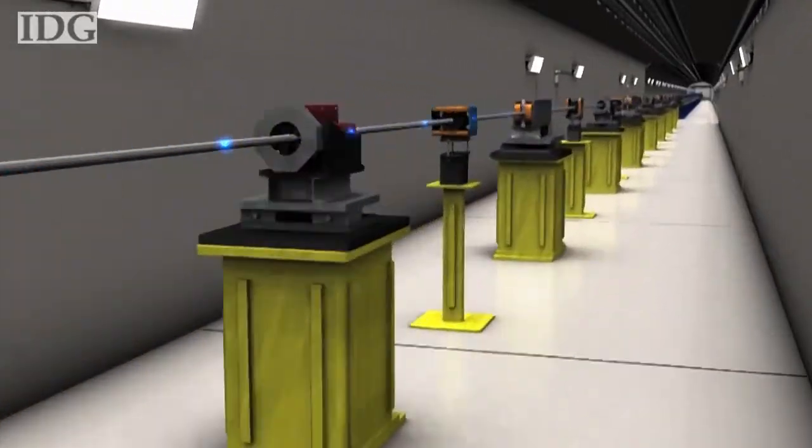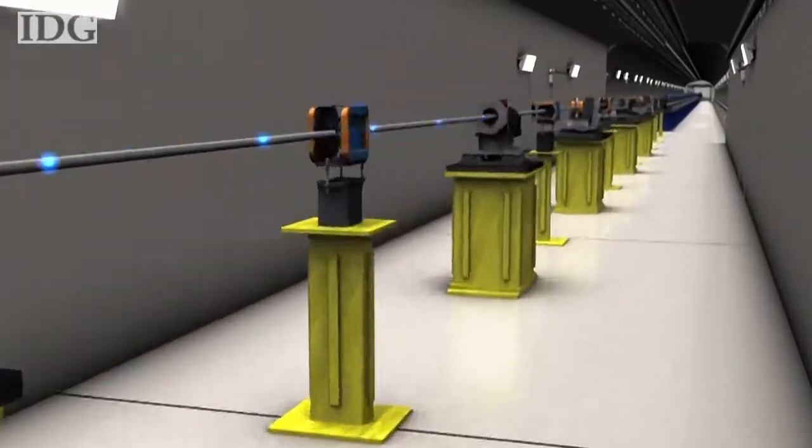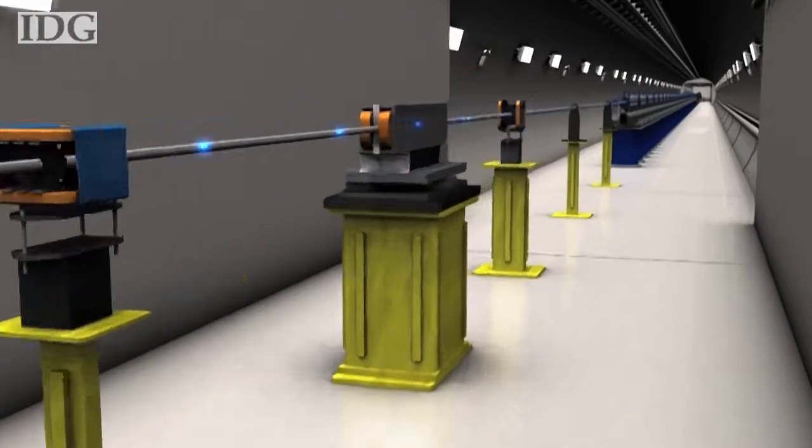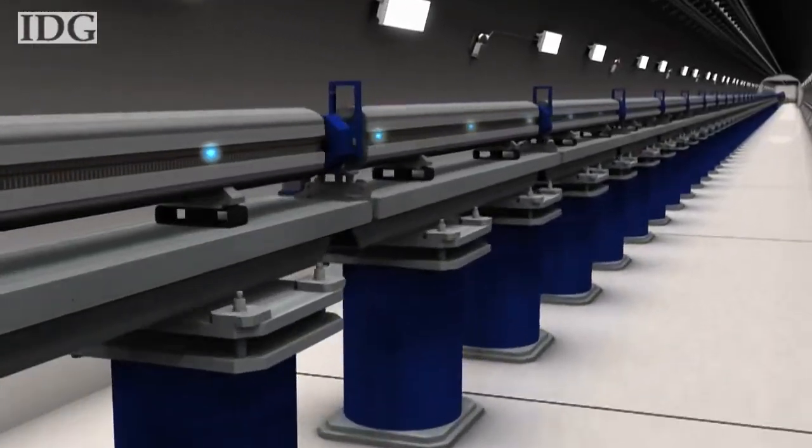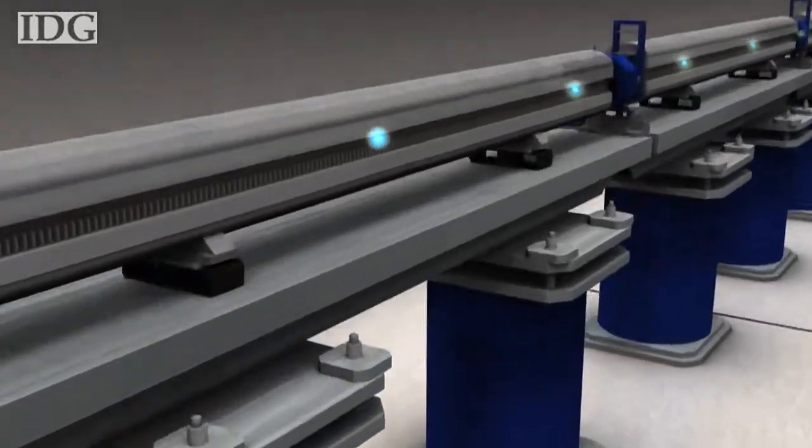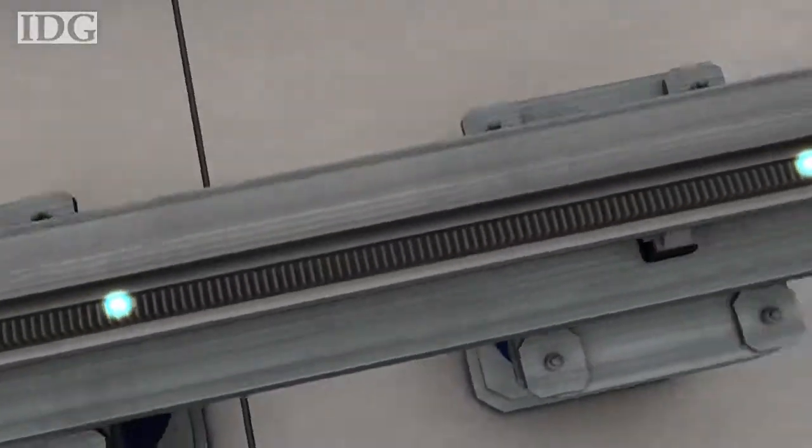The electrons then enter the beam transport hall, where a pipe, focusing magnets, and diagnostic monitors move the delicate beam from the accelerator into the heart of the LCLS, the undulator hall, where the x-ray laser light is generated.